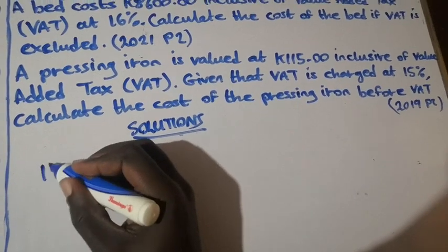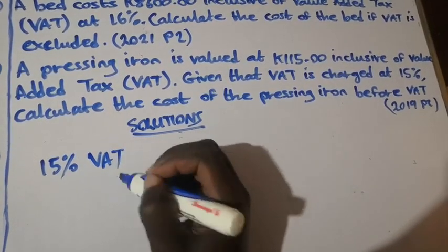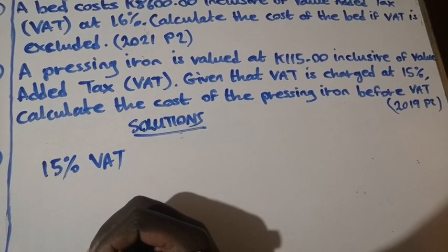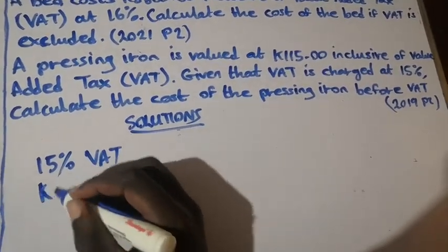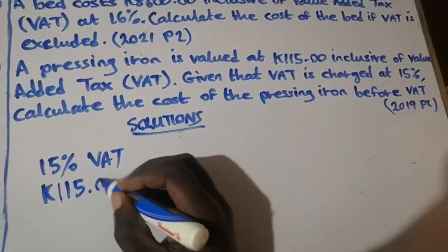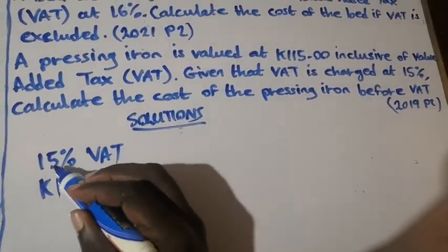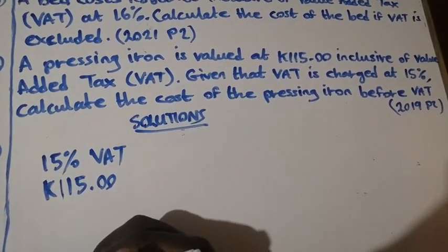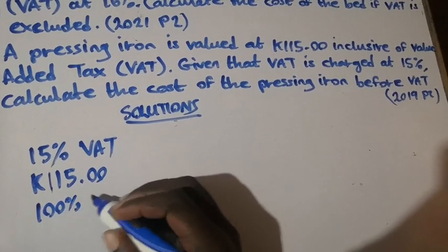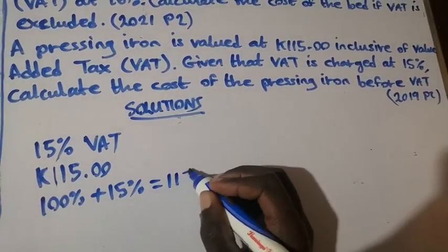We have 15%, which is VAT. Now they want us to calculate the cost of the pressing iron before VAT, because in this 115, VAT is included. So what we are going to do is first add 15% to 100%. We know that total percentage adds up to 100, so we get 15% added, which is equal to 115%.